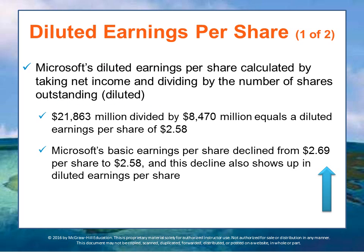Microsoft's diluted earnings per share equals their net income of $21.9 billion divided by the diluted number of outstanding shares of 8.5 billion, for $2.58 a share. We can see from the income statement that Microsoft's basic earnings per share declined from $2.69 per share to $2.58 per share, and this decline also shows up in diluted earnings per share. There are a certain number — though not that many — outstanding shares or financial instruments that might be converted into shares.